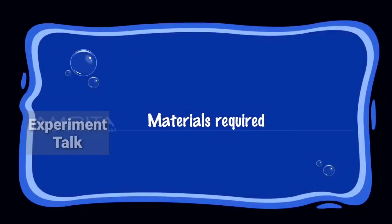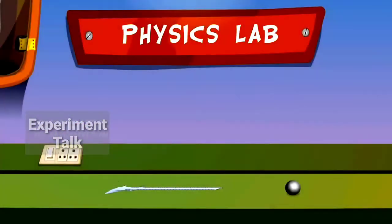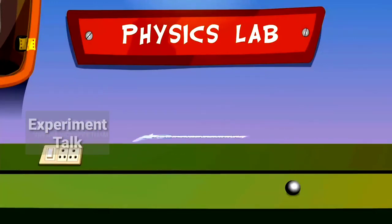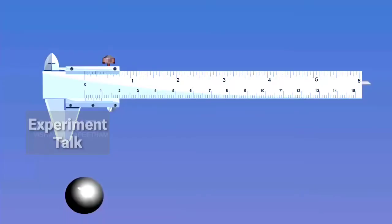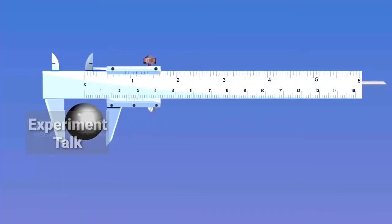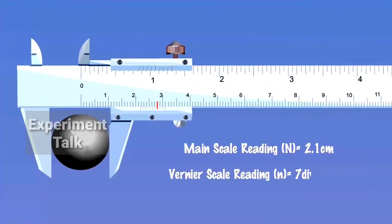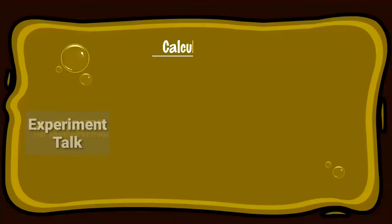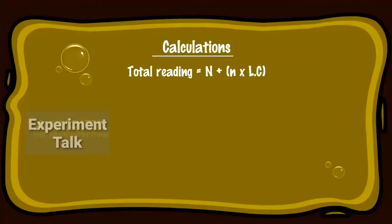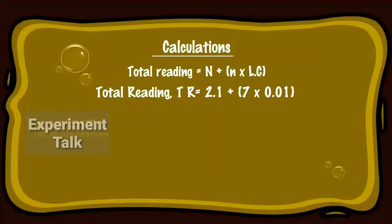Sphere. Materials Required: Vernier Calipers and a Sphere. Take the Vernier Calipers. The sphere to be measured is placed in between the outer measuring jaws and held tight. Note the main scale reading and Vernier scale reading. Calculation: Total reading TR is equal to N plus N into least count. TR is equal to 2.1 plus 7 into 0.01.